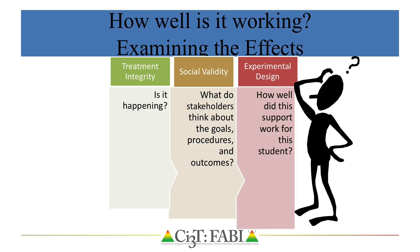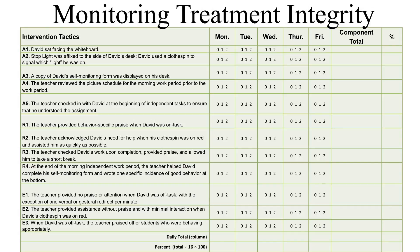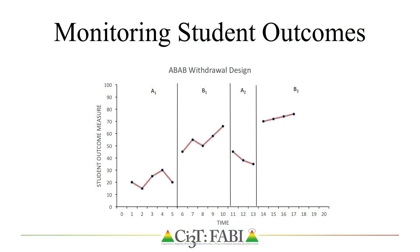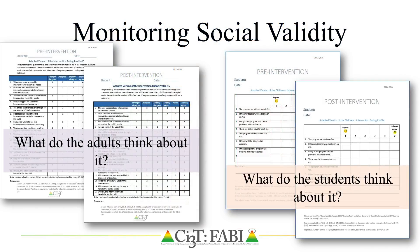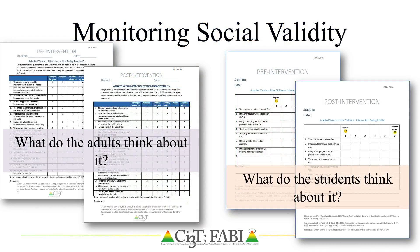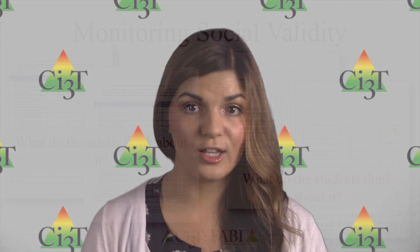To answer these three questions, teams complete information by assessing treatment integrity, using a single-case research design — such as an ABAB withdrawal, changing criterion, or multiple baseline design — to examine student performance while measuring behavior using a valid measurement system, and administering social validity surveys prior to and at the conclusion of the intervention to examine stakeholders' views. Teams follow single-case design methodology to guide when to introduce, withdraw, or change conditions by employing visual analysis.